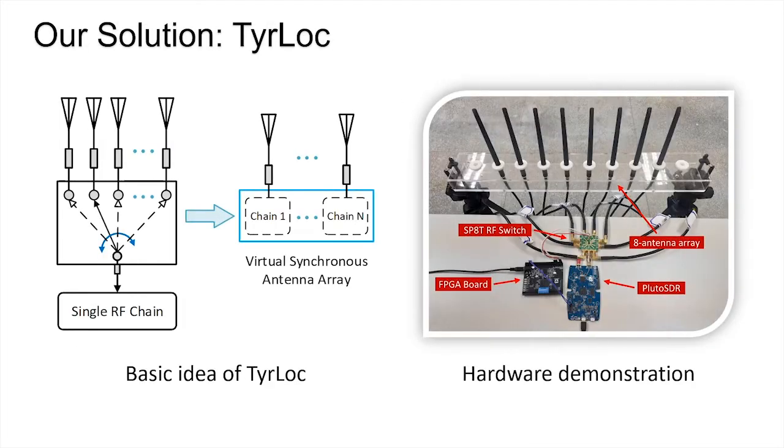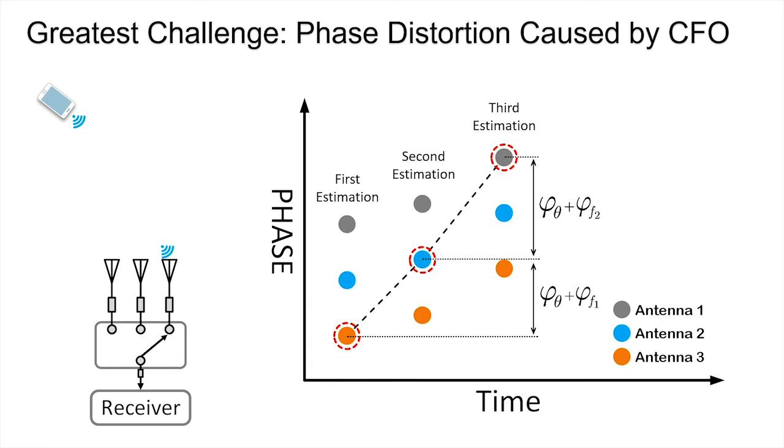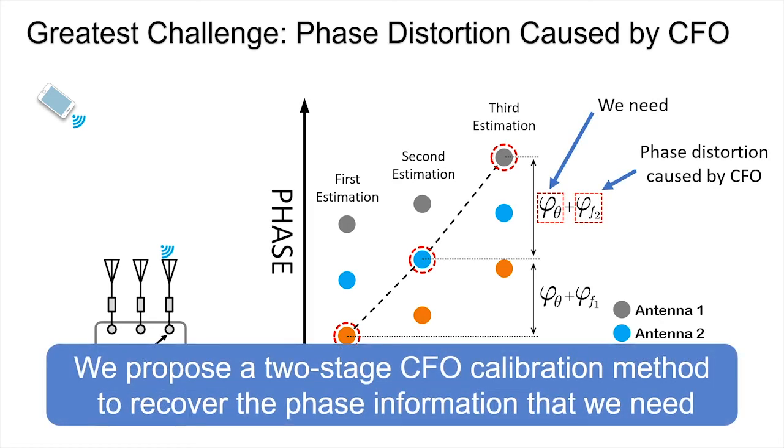We propose TyrLoc that only uses a single RF chain to build a virtual synchronized antenna array. The greatest challenge is to eliminate the phase distortion caused by carrier frequency offset. We designed a two-stage CFO calibration method to recover the phase information that we need.